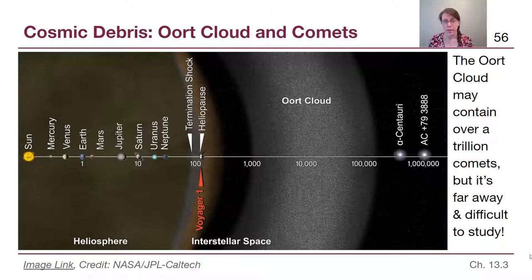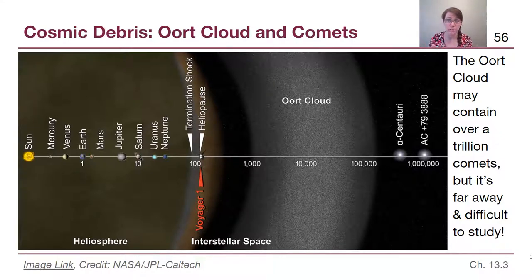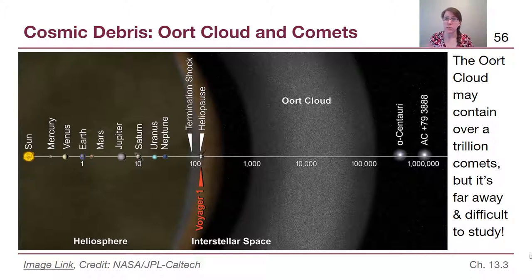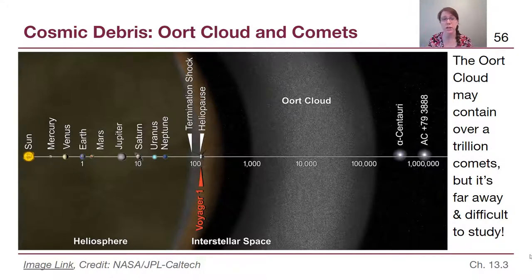This diagram can be tough to understand because the line through the middle is a logarithmic scale — from the Sun to Earth is one astronomical unit, and the same screen distance represents ten times the amount of distance, and so on. It shows us Voyager 1, the farthest human-made object from the Sun, launched in the 1970s and moving away ever since.